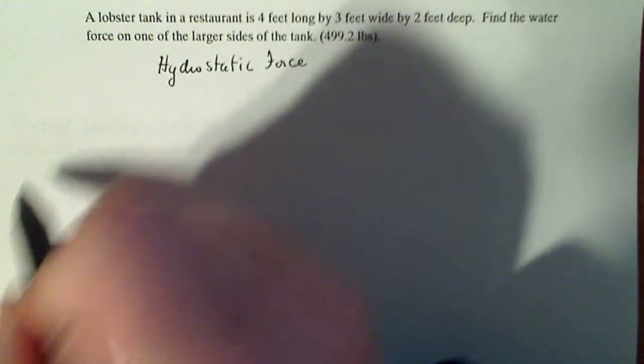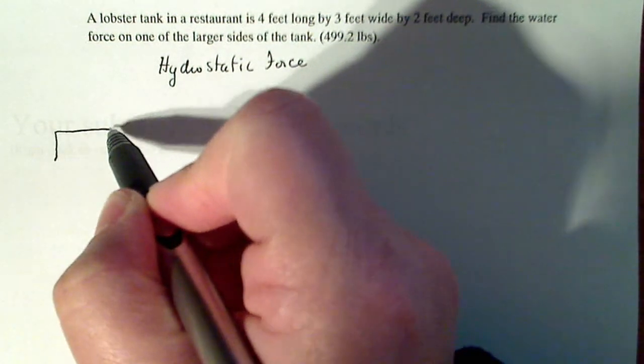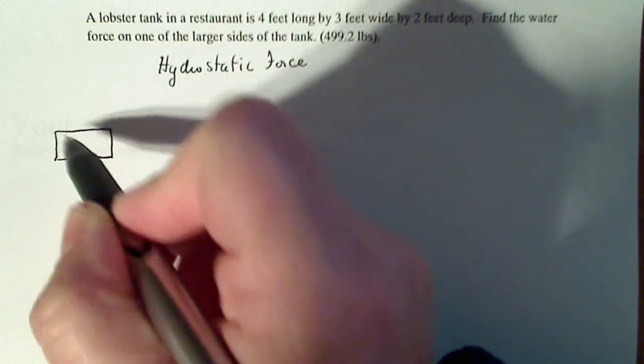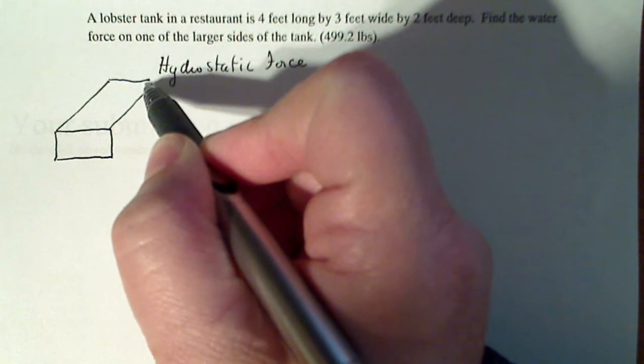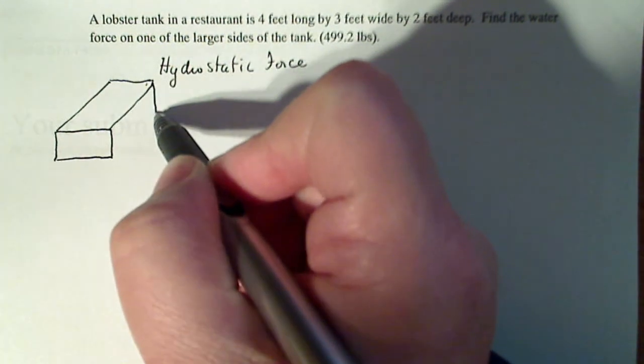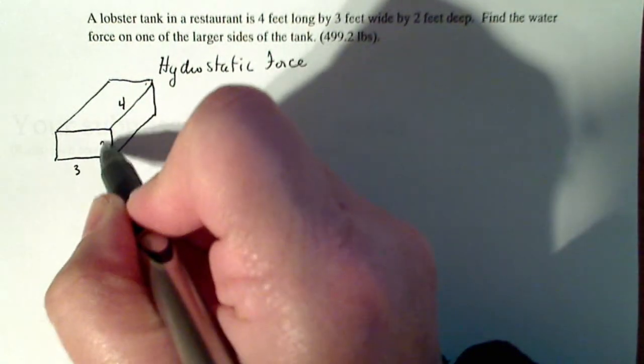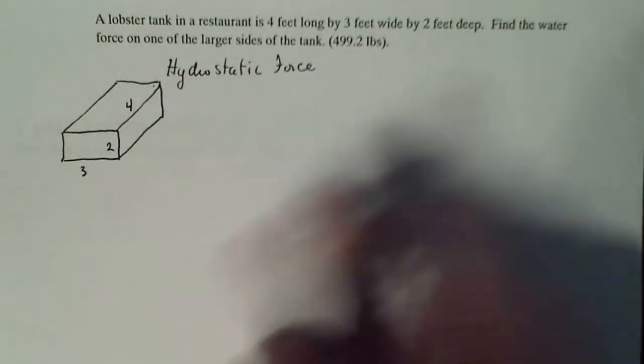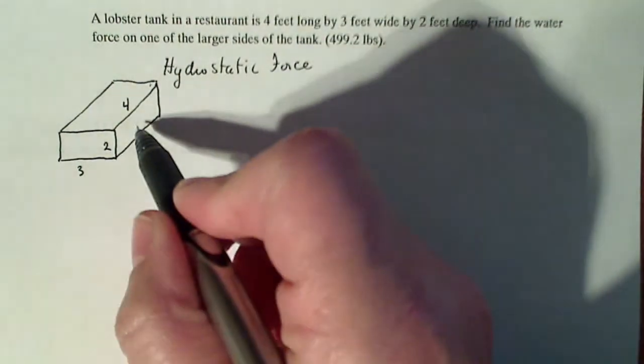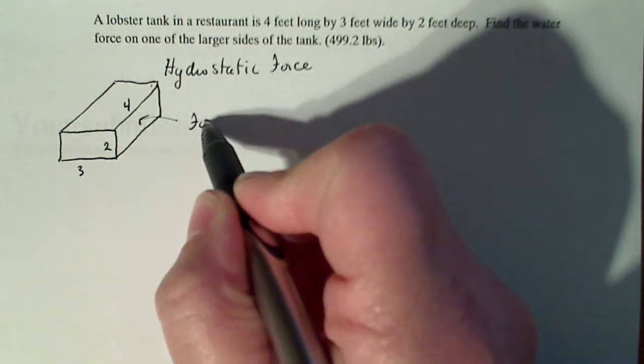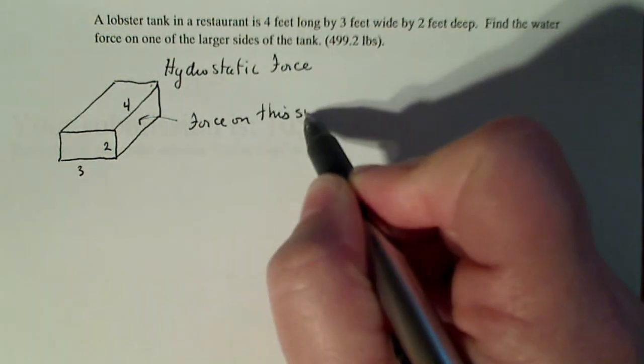So I'm going to draw a diagram of my tank. So it's four feet long, three feet wide, two feet deep. So I draw my tank. This is four, three, two, and we want to find the water force on the larger side of the tank. So it's going to be force on this side because that's the largest side.